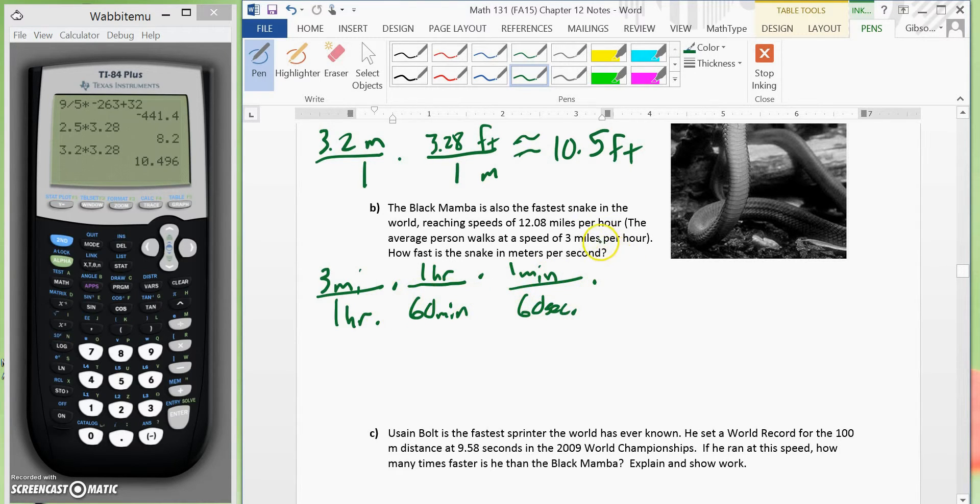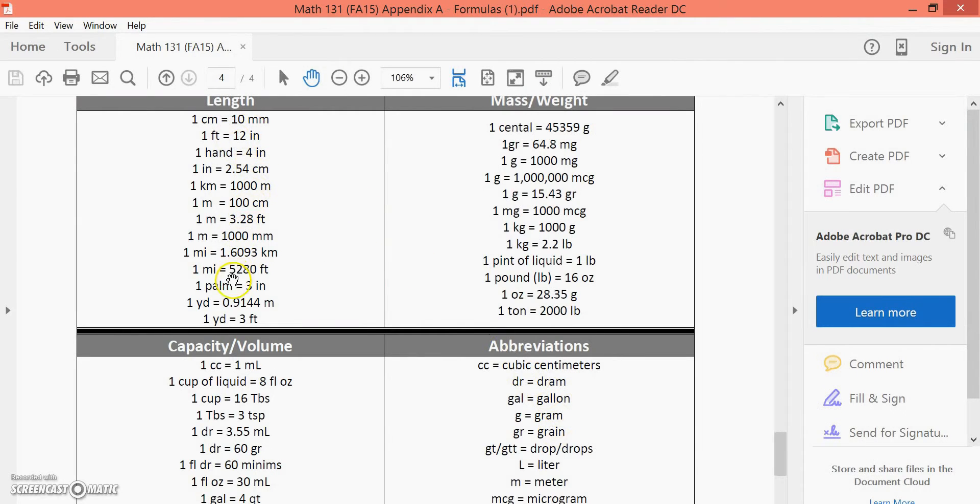So now we took care of the hours to seconds. Now we want to take care of the miles and make it meters. So we will go back to our sheet here. We will look here at miles. Now, if you notice here, miles and kilometers are together here. Now, remember we did this before.